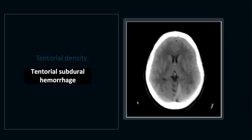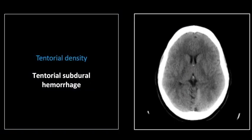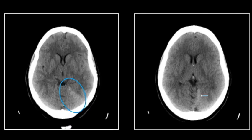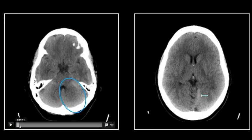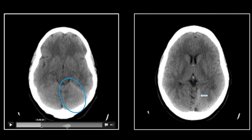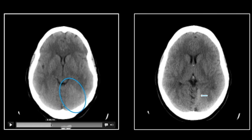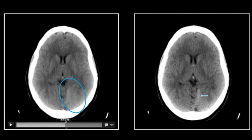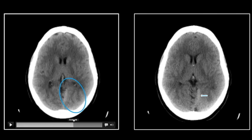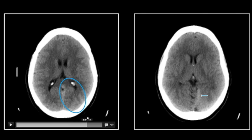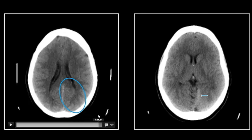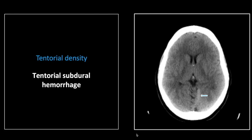Our next case is another typical location for subdural hemorrhage, and that's along the tentorium. It's symmetry that really helps you here. There is a nice asymmetric thickening and increased density in the left tentorium compared to the right. That again is a typical tentorial subdural hemorrhage.